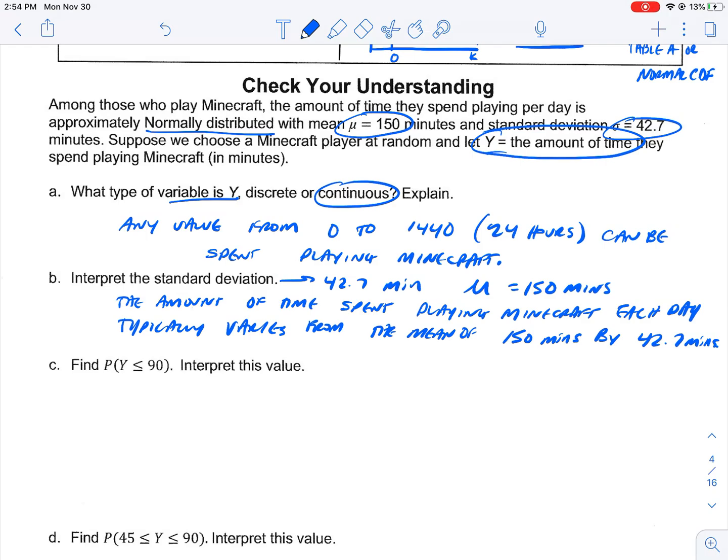So, find and interpret the probability that Y is less than or equal to 90. So, that would be the probability that a player plays less than 90 minutes. So, if we're actually going to find this probability, this is going to involve us drawing our normal curve like we've done before. And we know this is a normal curve because it told us up here. And our mean is 150. Our standard deviation is 42.7. In the middle here is 150.